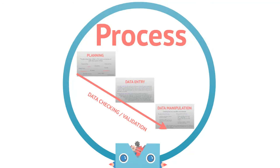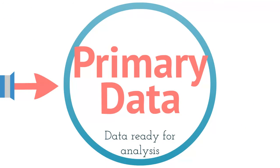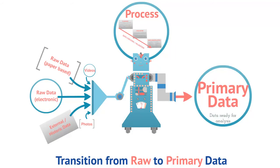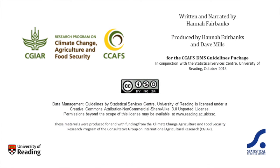Once the raw data has been through the transition process of planning, data entry, and data manipulation, the result is the primary data. Primary data sets should contain all of the variables required to conduct the analysis outlined in the analysis plan. More details about the transition from raw to primary data introduced in this video are available in the corresponding guide as part of the data management support pack.